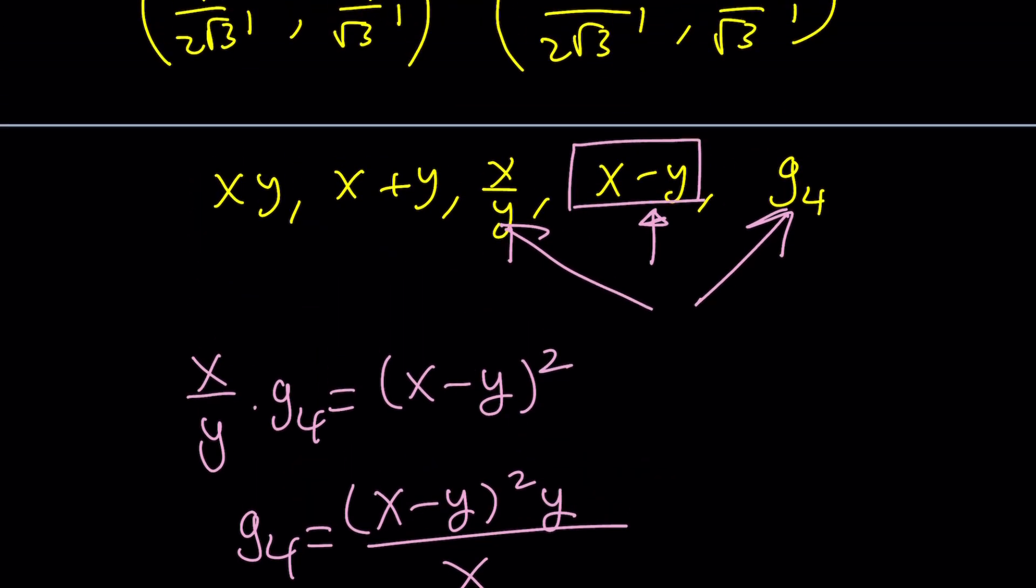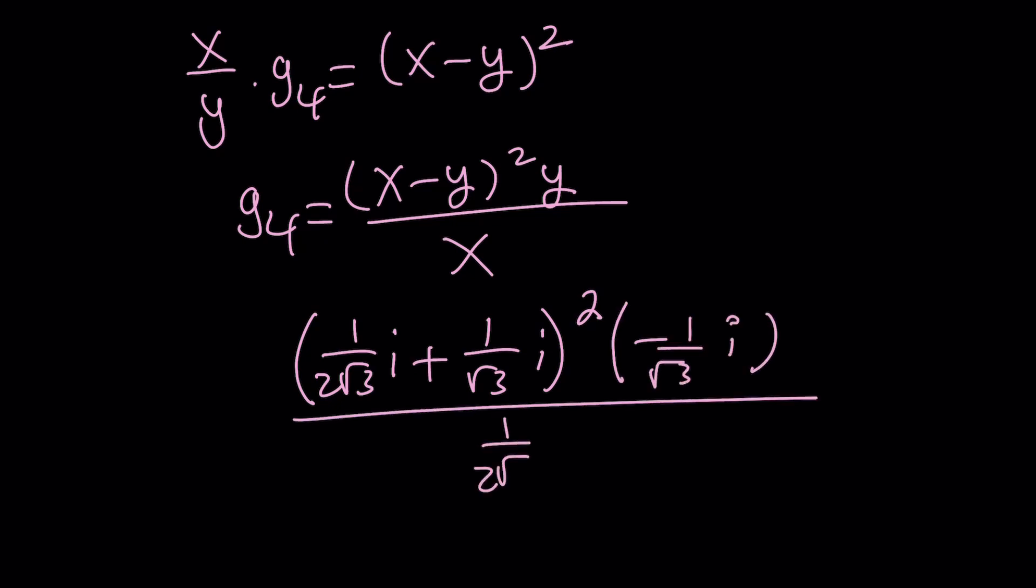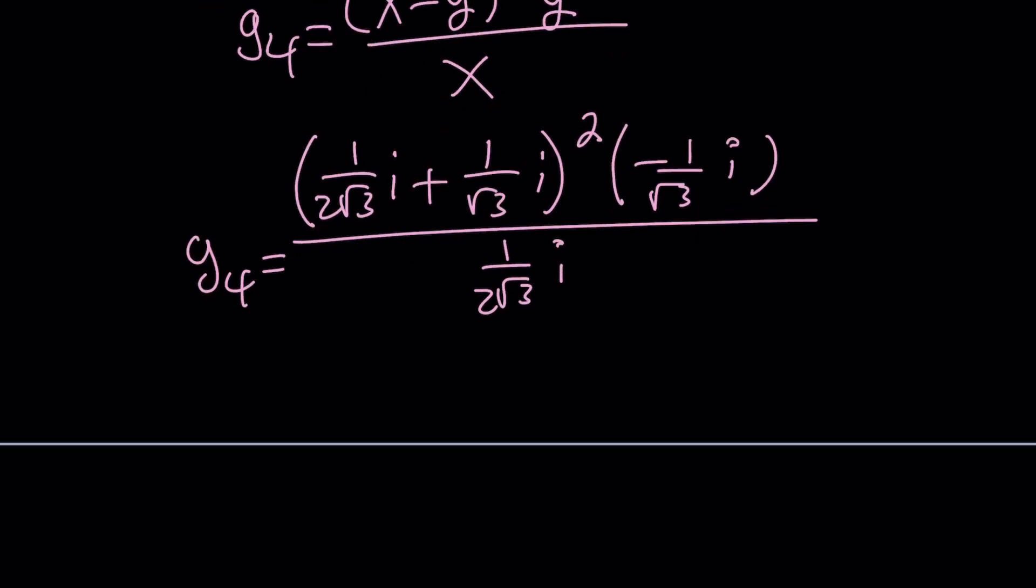But let's go ahead and just plug in the values and see what happens. What is x? Let's just pick one of the values. What about 1 over 2 root 3i? And in that case, we have negative y, which gives us negative 1 over root 3i. And we're supposed to square that. And then multiply that by y again, and divide the whole thing by x. This should be the answer, one of the answers for g sub 4.